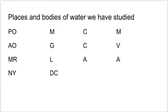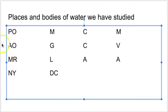The next thing we're going to do is I want you to number 1 to 14. These are all places and bodies of water that we have studied. Think about the map, think about the different countries that border our country, think about the states, think about the water — the oceans and the rivers. I have given you some initials to start with to help jog your memory, but I want to see what you can do. Press pause because the next slide will have the answers.